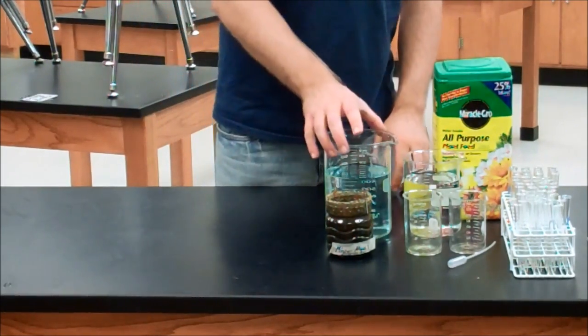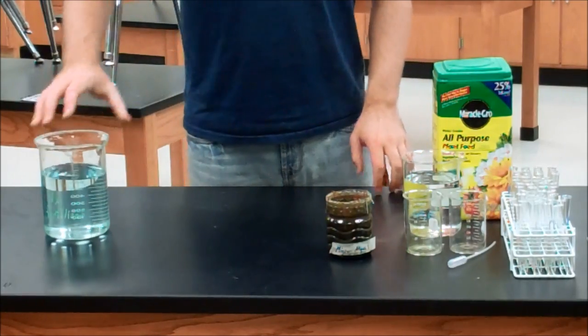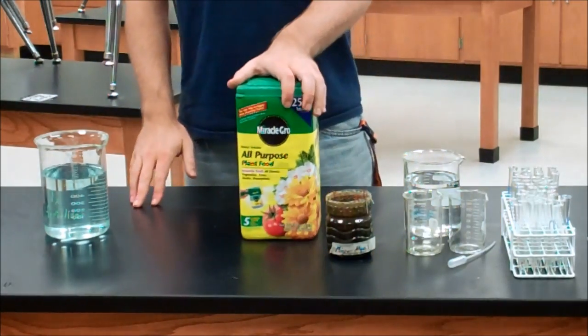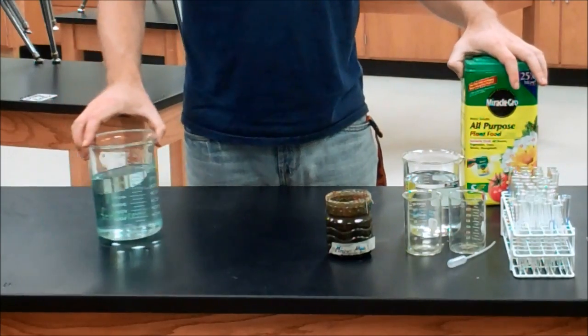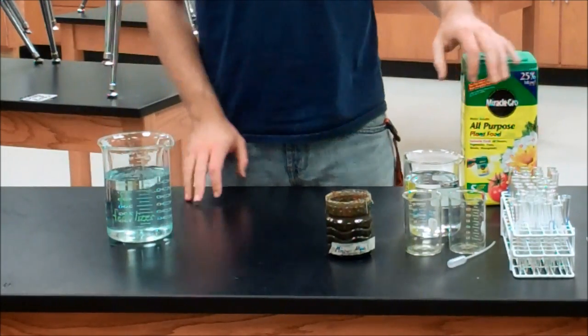The first thing we're going to need to do is mix up some fertilizer. Use the concentration recommended on the can when you get it. Once you have it mixed up, make sure to label it. That's your 1X fertilizer.